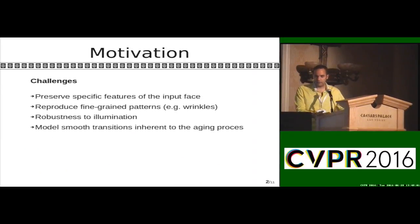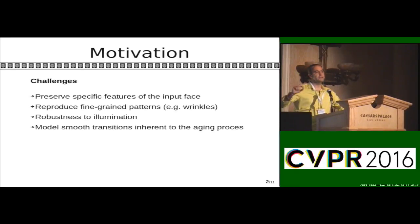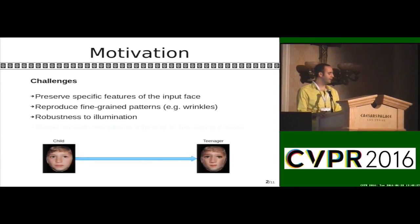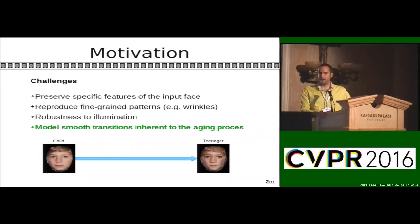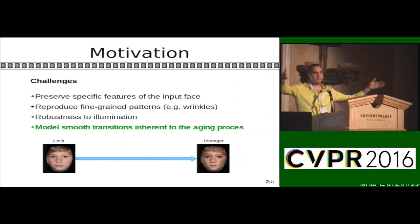We are not the first ones trying to do face aging. In the community, they identify different challenges — for example, how to preserve the specific features of the input face, or reproduce fine-grained patterns like wrinkles, how to be robust to illumination, and how to model smooth transitions inherent to the aging process. I show an example of what happens with a one-step method that tries to generate a teenager face from a child face — you can see many ghost artifacts due to the large gap between the input age and the desired output age.